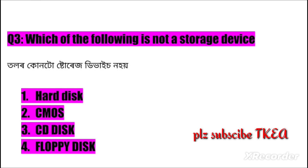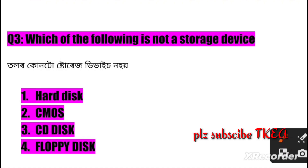Question number three: Which of the following is not a storage device? Option one: hard disk, two: CMOS, three: CD disk, four: floppy disk. The right answer is number two: CMOS.